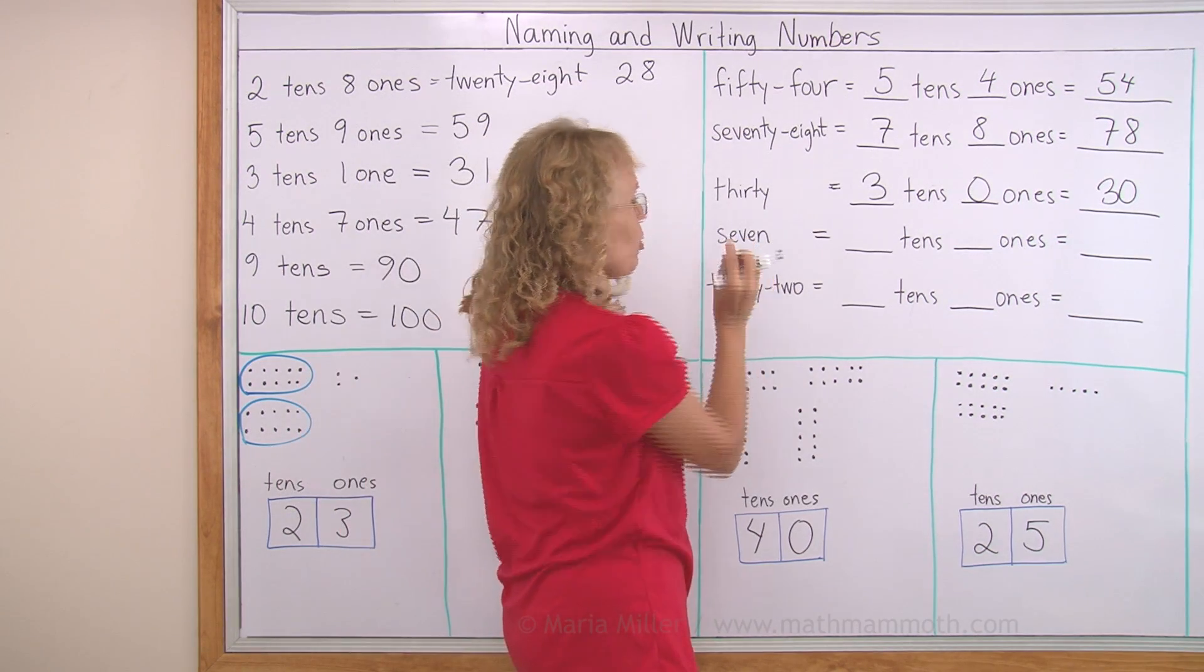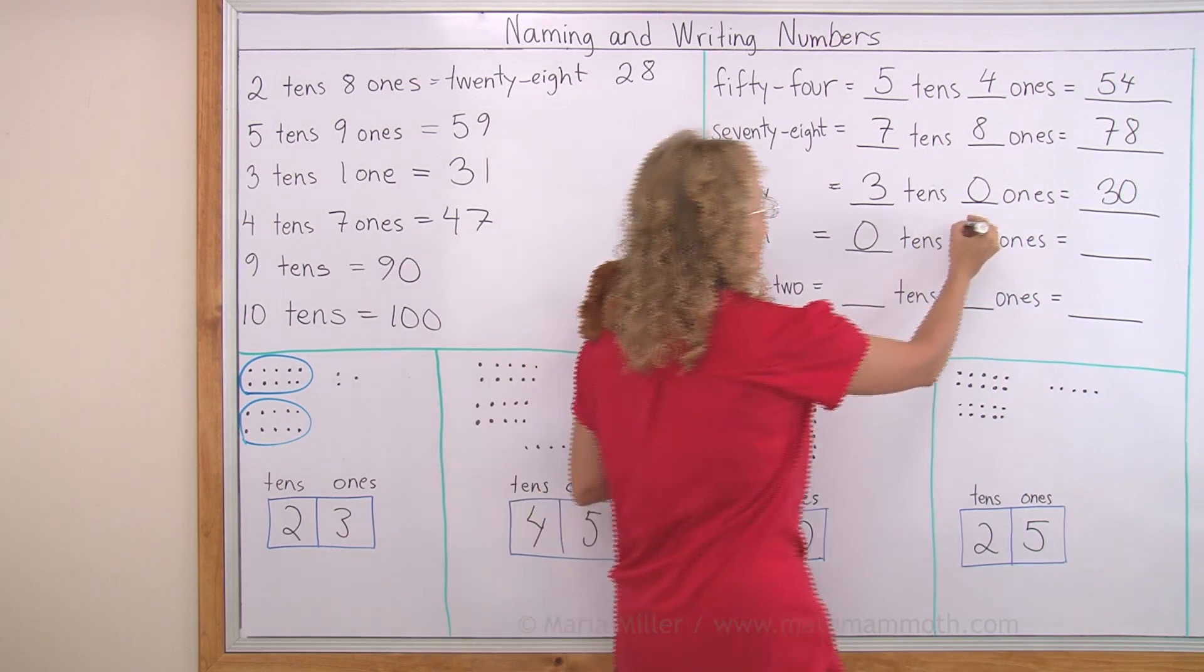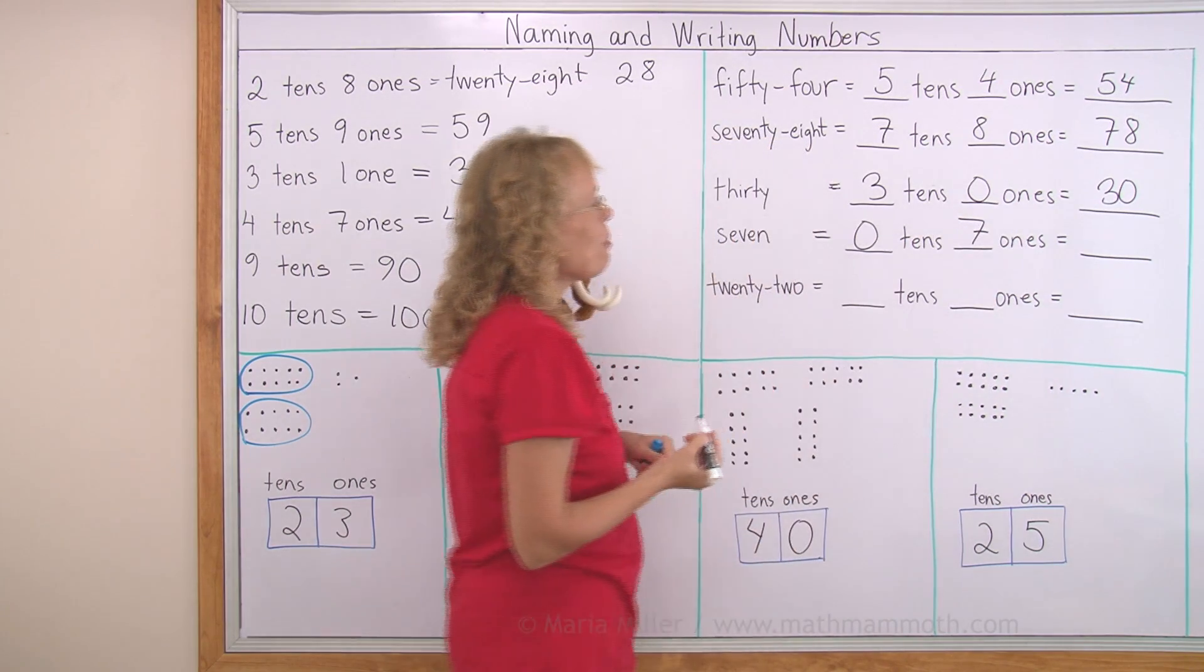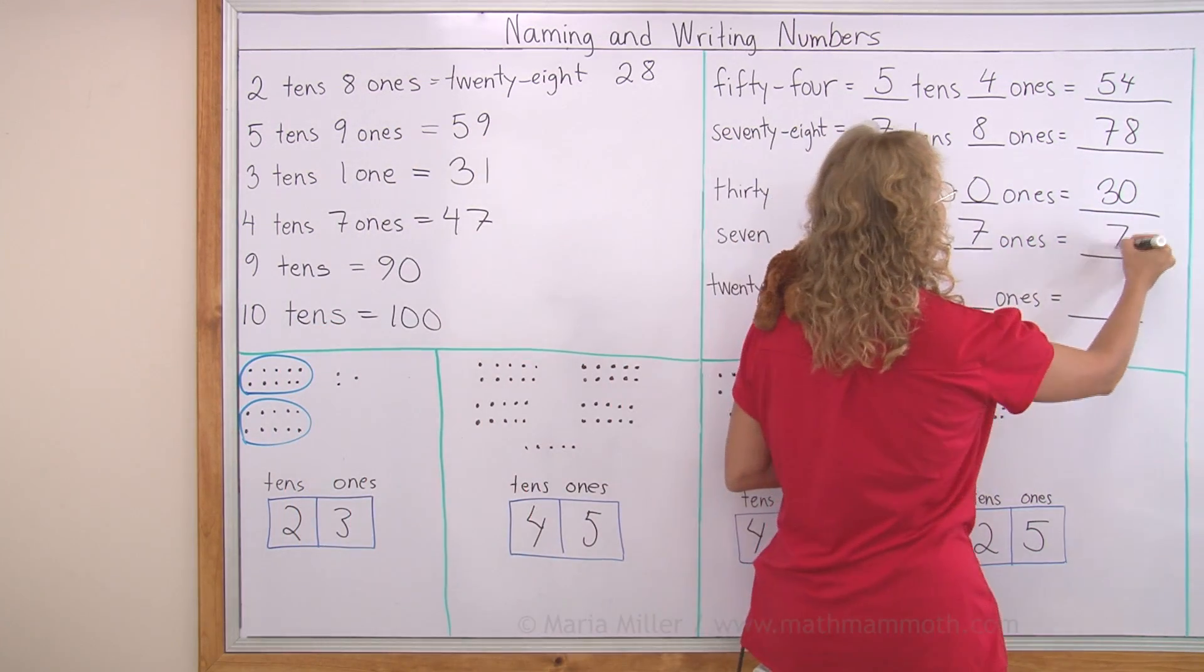7. You know 7, don't you? It is no tens, 0 tens, and 7 ones. But this one we don't normally write as 0, 7. We write it as plain 7.